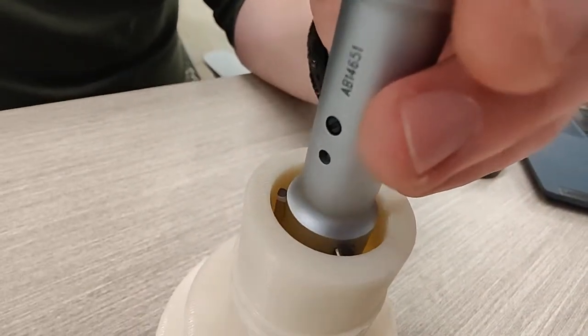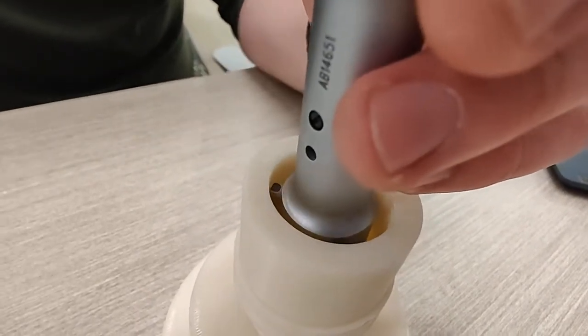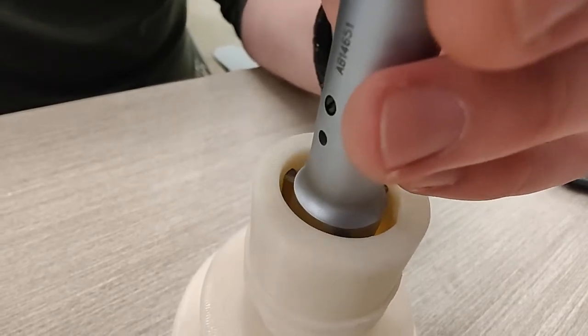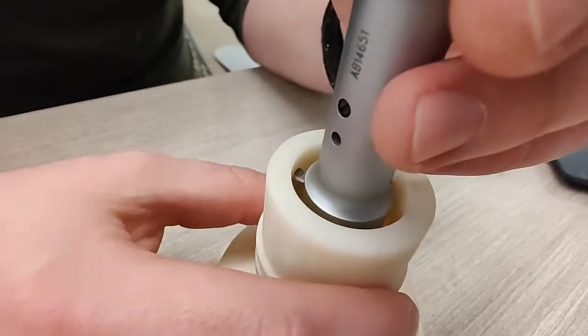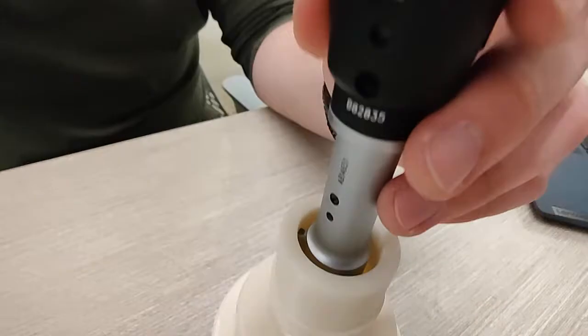Insert the head of the micrometer into the bore and turn the spindle clockwise until we feel the resistance and we get a click.